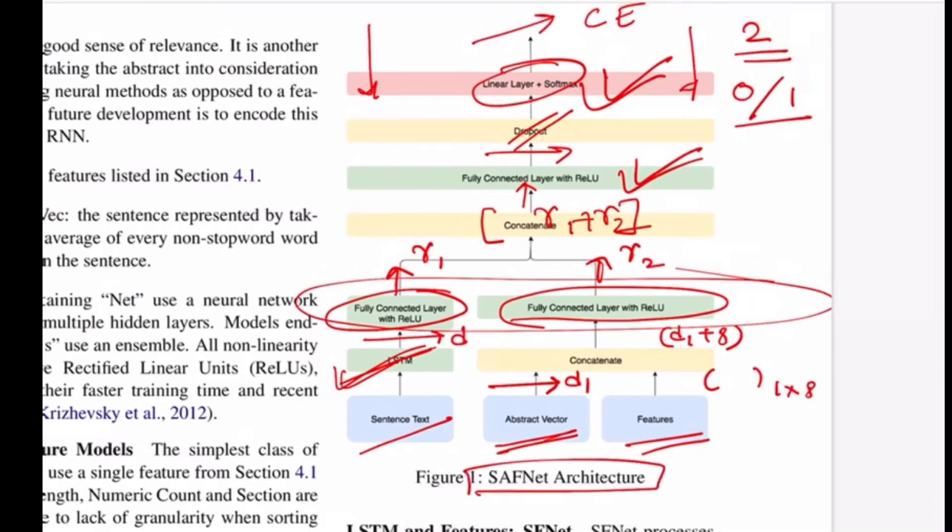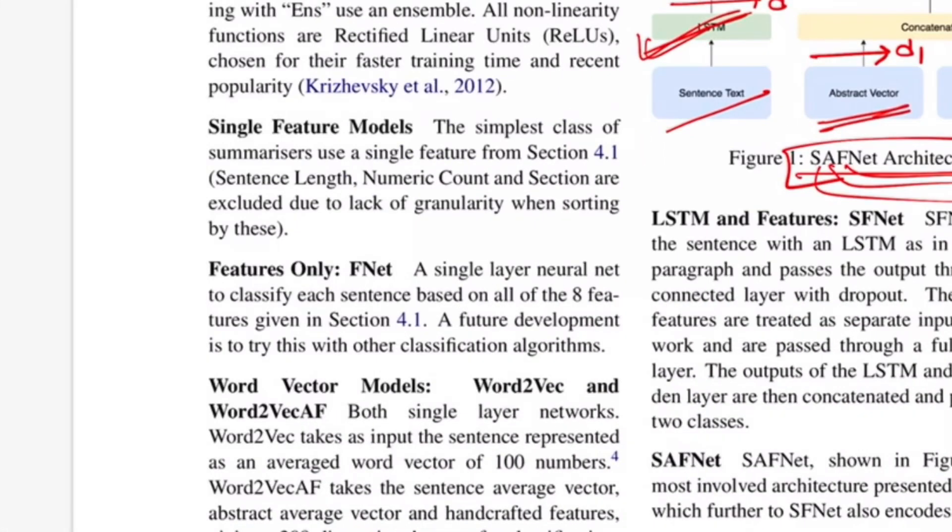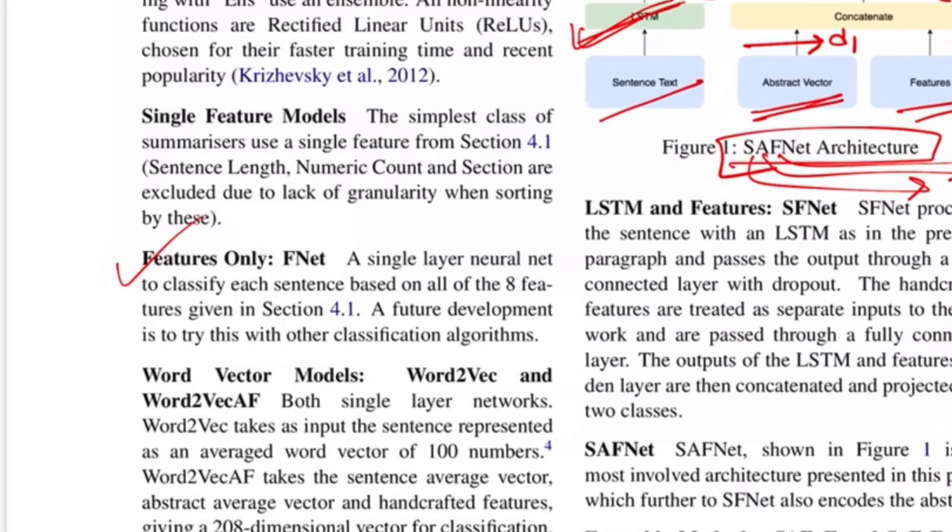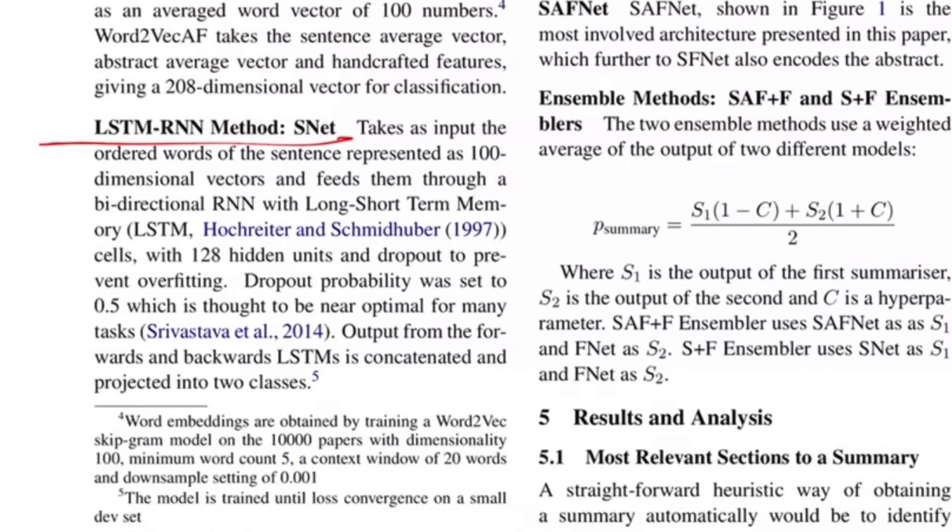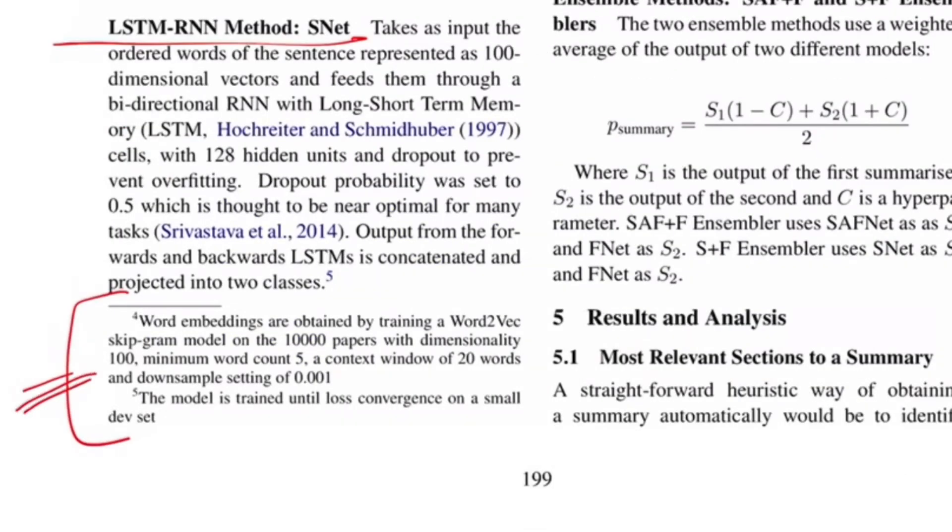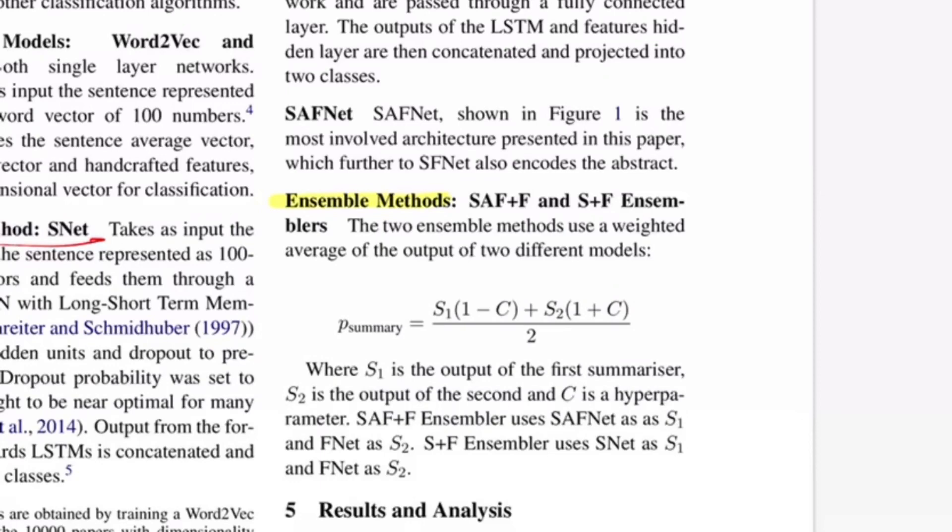They call this SAF-net architecture where S stands for sentence, A for abstract, and F for features. The rest of the models they tried were just feature net where they didn't use the LSTM representation or abstract representation, and they also tried just the LSTM network without considering the abstract and features they proposed. They talk about the word2vec model trained using 10,000 papers for 100 dimensions. Authors point out an ensemble method that uses SAF plus F which is sentence abstract features and a feature model, so this is an ensemble. They also used another model of sentence and feature, so they have four models in place at this point.